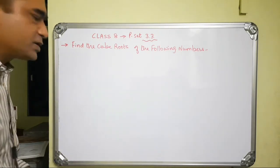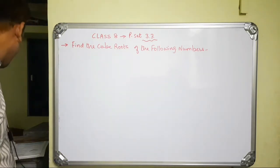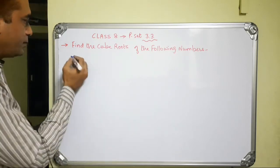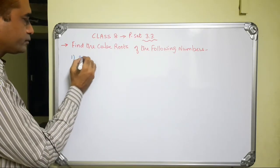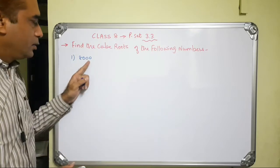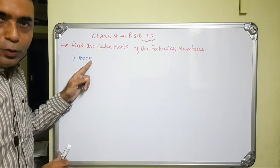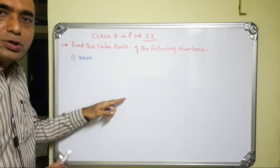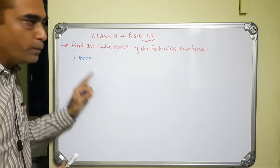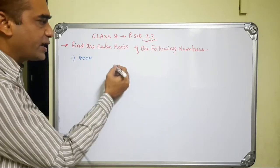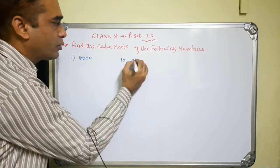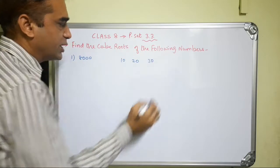Now let us start with the first question. The first number is 8000. The digit at the unit place is 0, therefore in the cube root also the digit at the unit place will be 0. So the possible cube roots could be numbers like 10, 20, or 30.